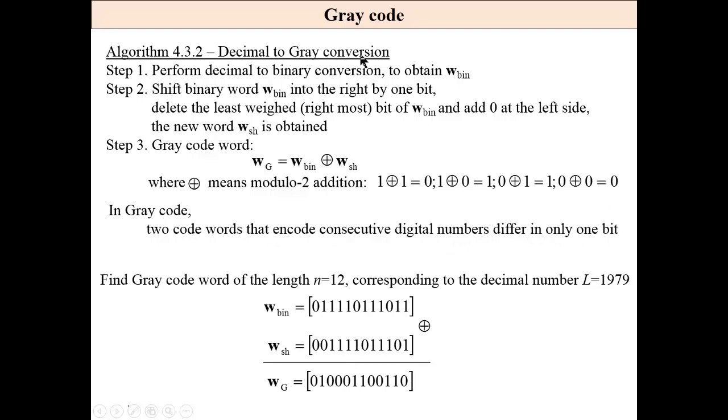Decimal to grey conversion is very simple. The first step is decimal to binary conversion. Then we find the shifted word. We shift this binary word to the right by one bit.